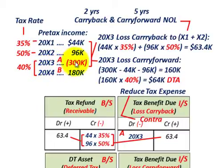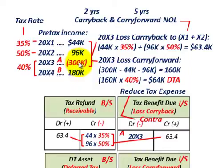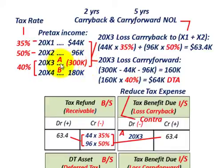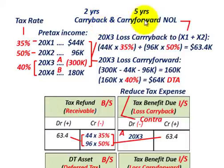We'll start with the $300,000 net operating loss for 20x3, and also look at year 20x4 with $180,000 worth of profit and how that integrates into the loss carry forward. We can carry the loss back two years and carry forward — it could be 20 years, but I'm showing five years here, which is sufficient for our example.